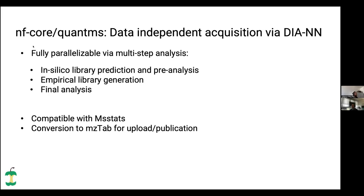All branches can be converted into MCTOP — which is a human-readable, tab-based format for quantities and identifications from such experiments — and you can use it immediately for upload to PRIDE or for publication, which is usually recommended by journals.